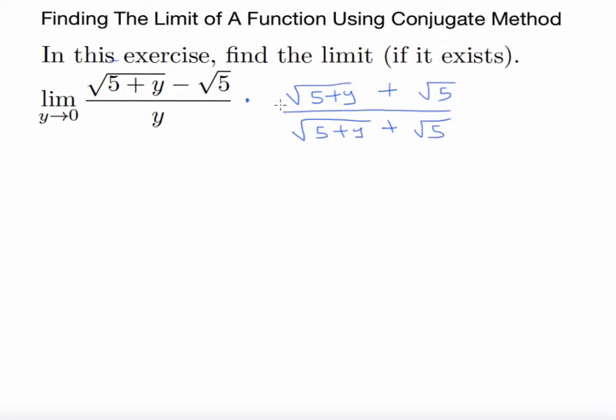So now that I have my conjugate expression here, I'm just going to multiply both of these together and I should have limit as y tends to 0 of this times this.